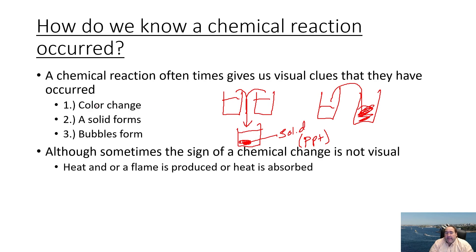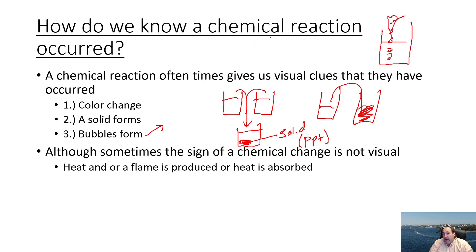Other very common signs that a chemical reaction has occurred are bubbles being formed. Bubbles are usually an indication that a reaction is taking place — when you see bubbles starting to form, those bubbles are usually gases that find their way to escape. Any type of presence of bubbles in a reaction is usually a very good indication that you probably produced some type of gas as a result of the chemical reaction.